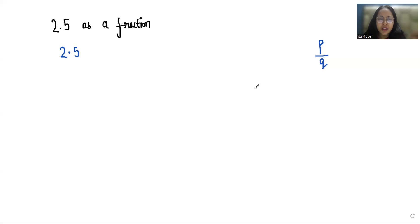So we have to convert 2.5 in fraction form, p by q form. So I'll take 1 in the denominator. Now we have to multiply with a number of times in numerator and denominator.